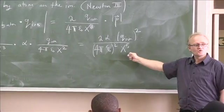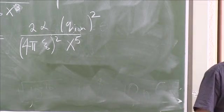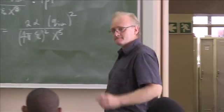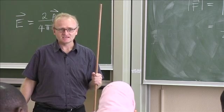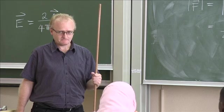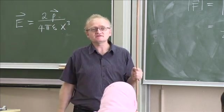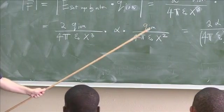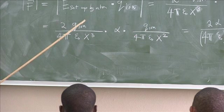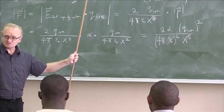So how does the force fall off? Like 1 over x to the 5. Can someone explain why 1 over x to the 5? How does the field of the dipole fall off? 1 over x cubed. Times the dipole moment — and the dipole moment depends on x like 1 over x squared, because that's the field of the ion. So it's the 1 over x squared falloff of the field of the ion, and the 1 over x cubed falloff of the dipole, conspiring to give a 1 over x to the 5 falloff of this induced force.